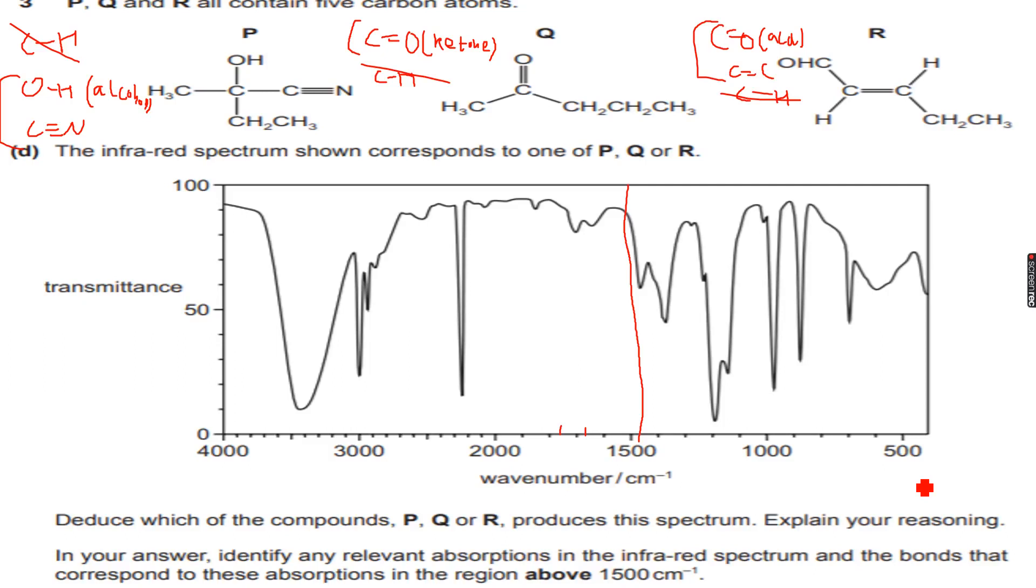This automatically tells us that it cannot be Q and it cannot be R because there is neither a ketone, there is no CO peak, there is no carbon-oxygen double bond peak.